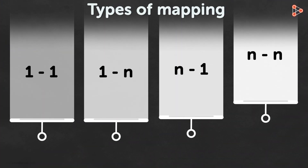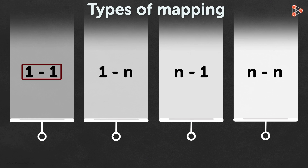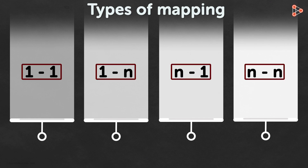There are four different types of mapping: one to one, one to many, many to one, and many to many.